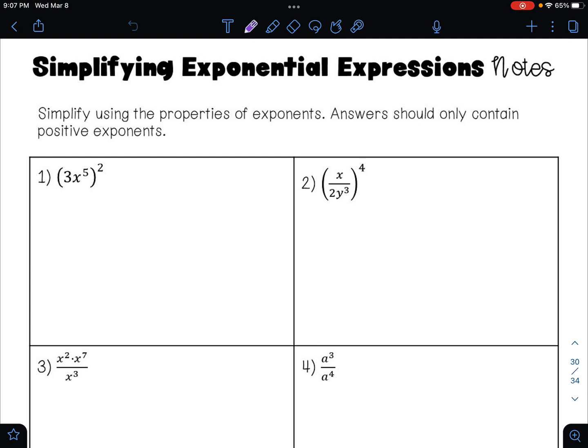On number one, we have 3 times x to the 5th raised to the 2nd power. So I'm going to distribute this exponent of 2. So I'll have 3 squared times x to the 10th power.